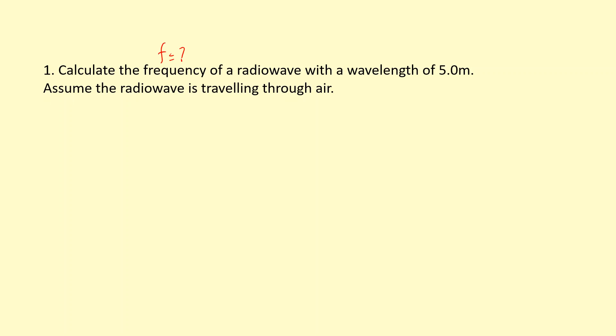radio wave with a wavelength of 5 meters. Assume the radio wave is traveling through air. In this question you need to know that radio waves are electromagnetic waves, so that means when they're traveling through air they're going to be traveling at the speed of light, which is 3 times 10 to the 8 meters per second.